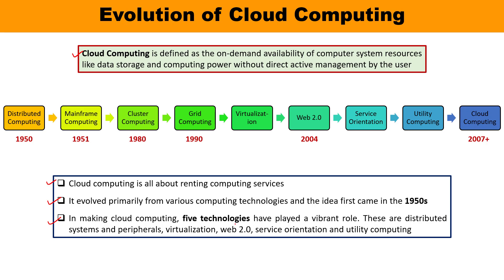Let us start from the first point, which is distributed computing in year 1950. From the term 'distributed,' it is clear that we are going to distribute something — meaning whatever computer system resources we have can be shared among various users, so all those resources can be utilized very effectively and efficiently. However, there is a limitation: all the systems must be at the same geographical location.